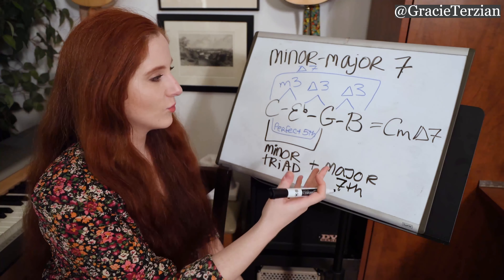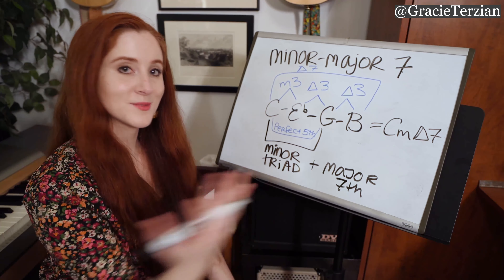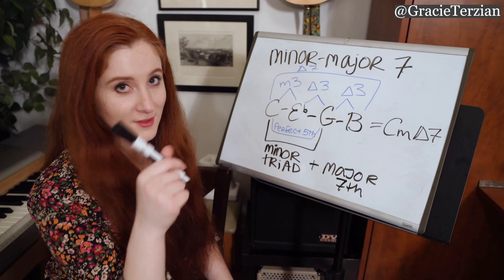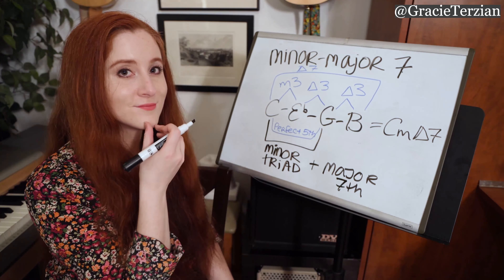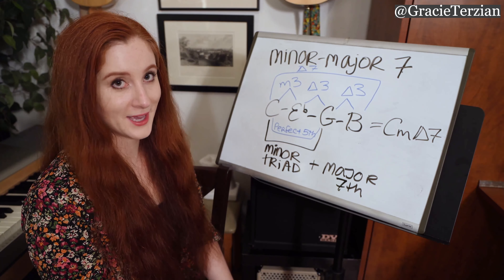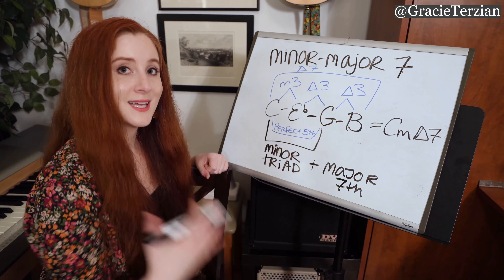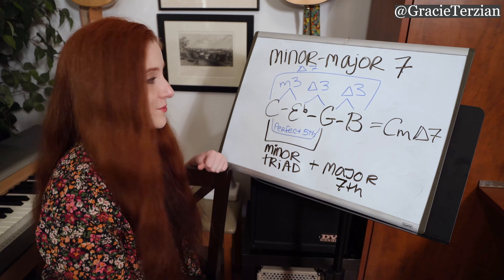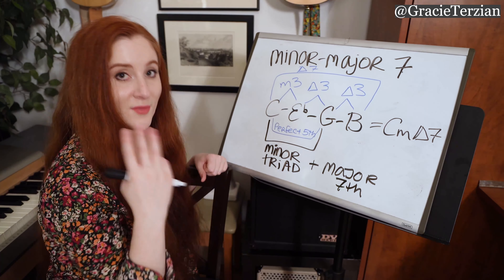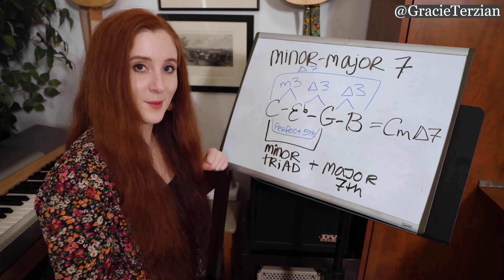We already went over the number of half steps in all these interval types, but let's do it one last time. Major seventh: eleven half steps. Perfect fifth: seven half steps. Minor third: three half steps. And major third: four half steps.